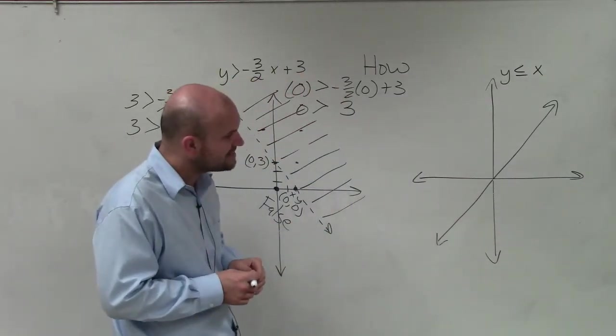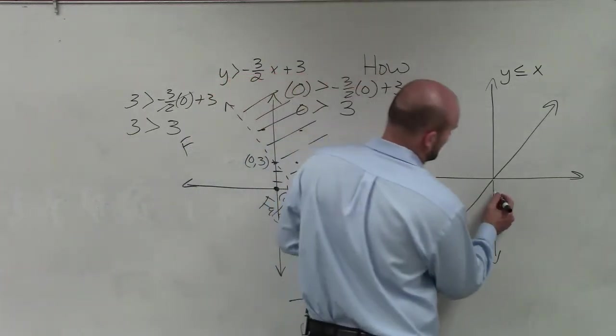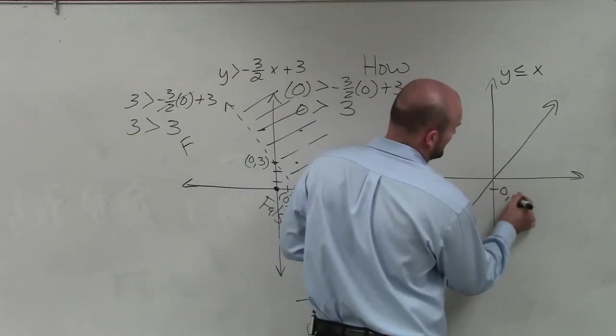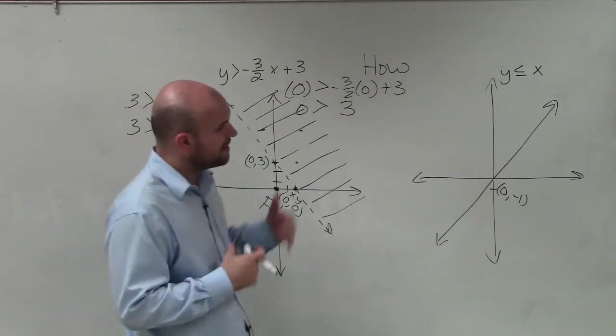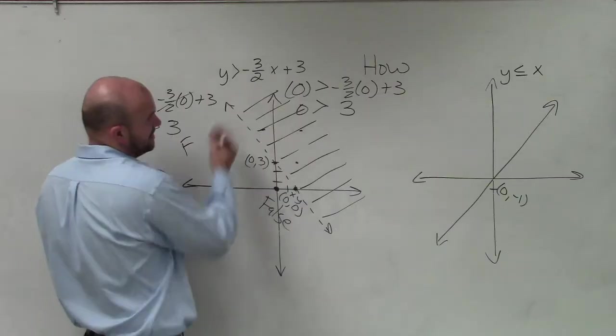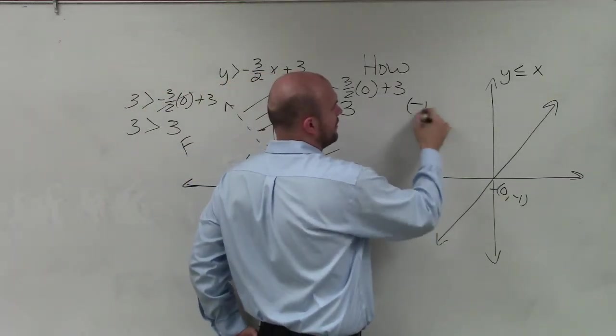What I'm going to want to test here is a point above or below. So let's choose this point (0,-1). When testing (0,-1), I'm going to use the same process that I did over here. I'll put 0 in for x and -1 in for y.